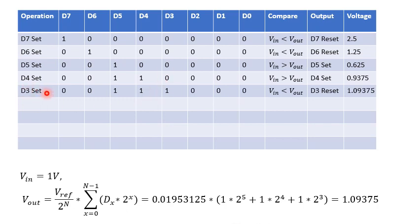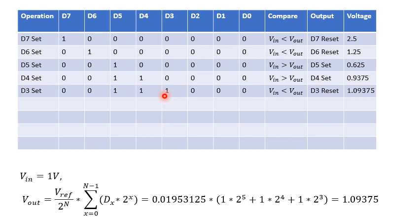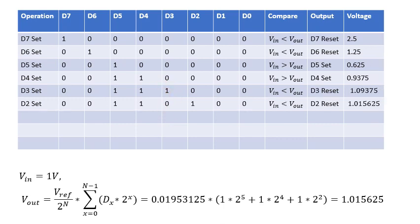Next, D3 is set by the ring counter, while D5 and D4 remain set. Computing Vout: 0.01953 × (2^5 + 2^4 + 2^3) gives approximately 1.09375 volts. Now Vout is greater than Vin (one volt), so Vin is less than Vout. Therefore D3 must be reset and will become zero in the next step.